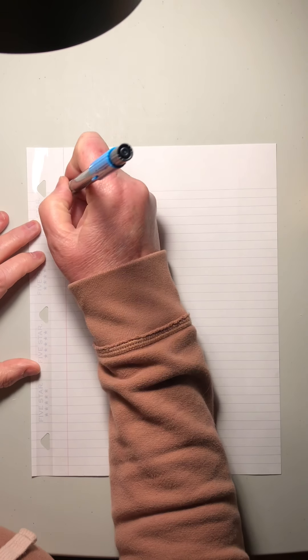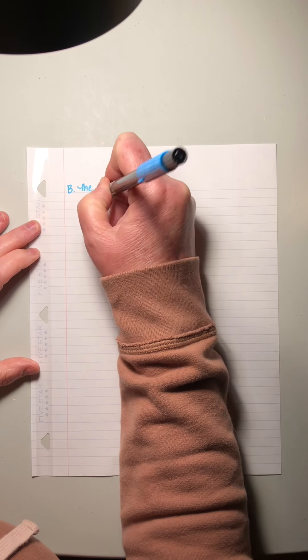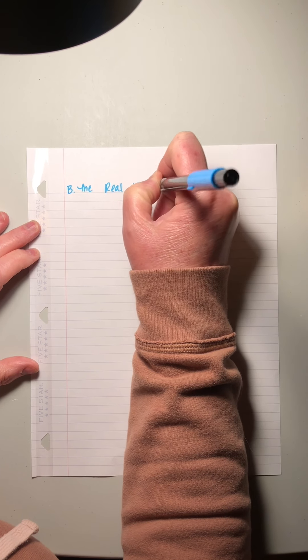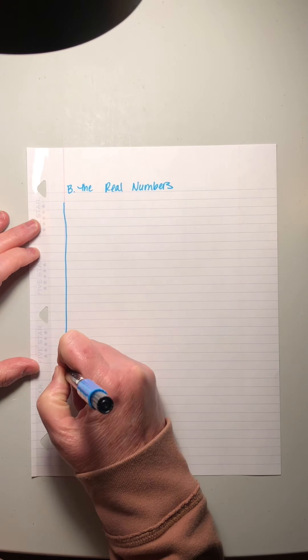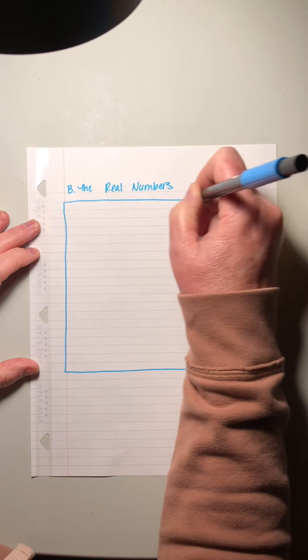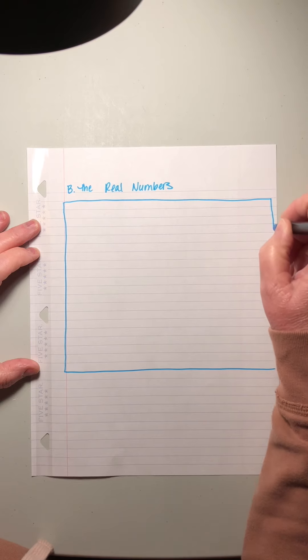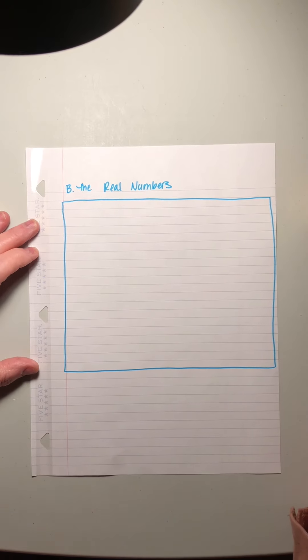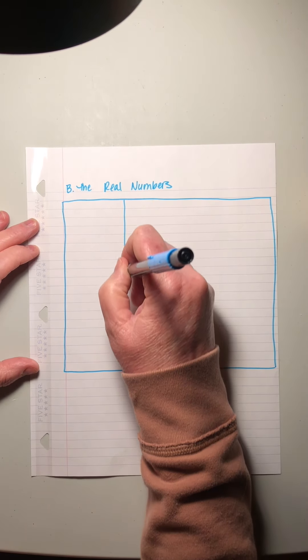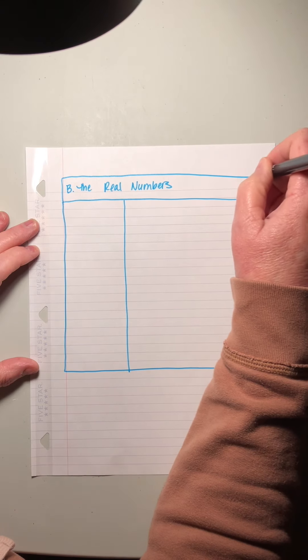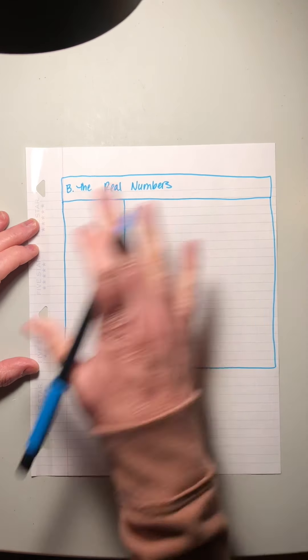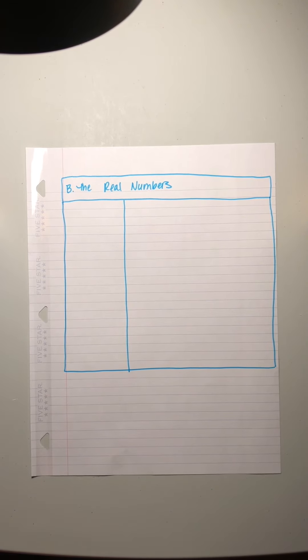we're going to make a great big old chart. So you need the better part of a page to draw and we're going to call this the real numbers. And what we're going to do is draw a big old square on our page. And we're going to talk about the different groups of numbers, the weird names we give them, and what they mean. I'm going to divide it right here and I'm going to put this into a title.